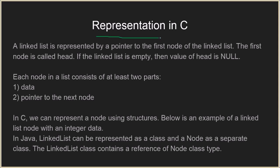So how do we represent a linked list in C? A linked list is represented by a pointer to the first node of the linked list. To refer to a linked list we just need the first node, which we call the head. Every linked list has a head that is its first node. If the linked list is empty, the value of head will be null. Now let's see what each node in the linked list will have. At a bare minimum it will have a data part and a pointer to the next node. Data could be anything — in our example we'll use integer data, but it can be a string, a structure, or a class.